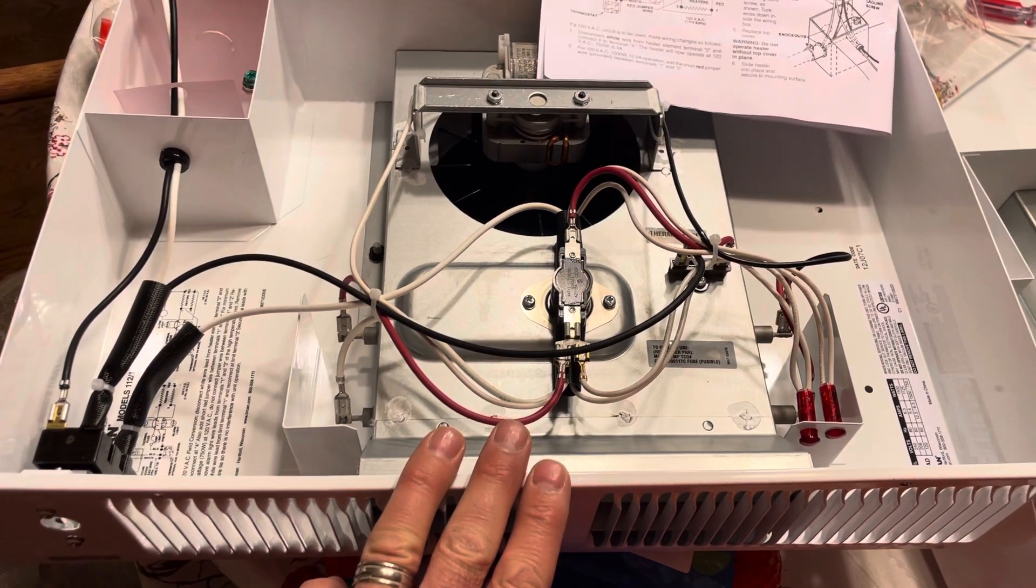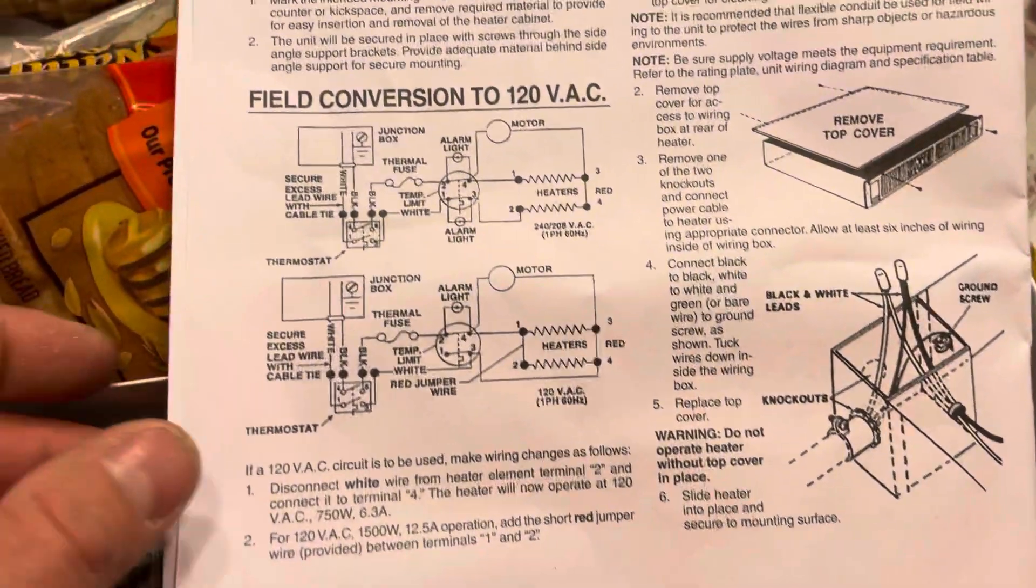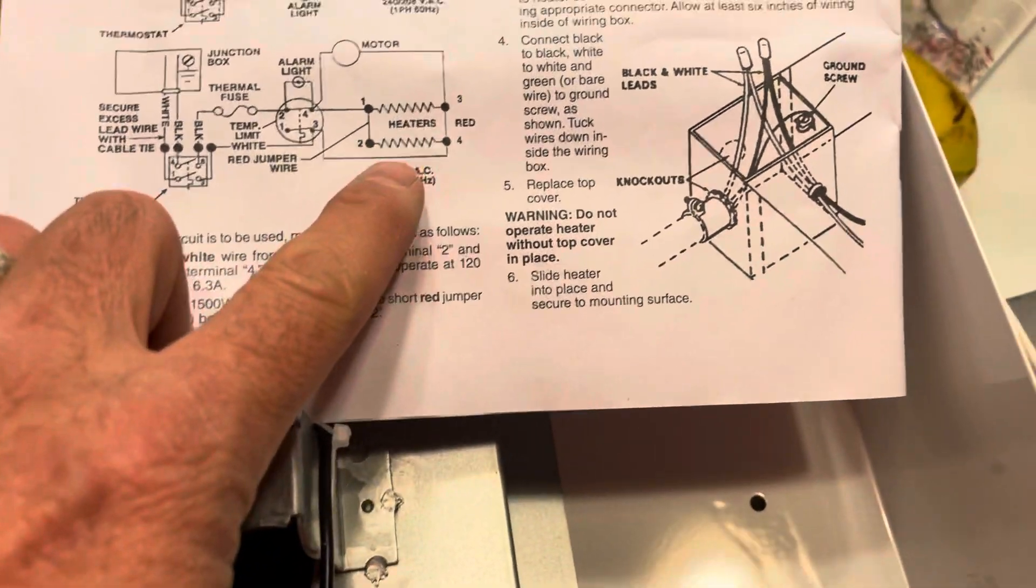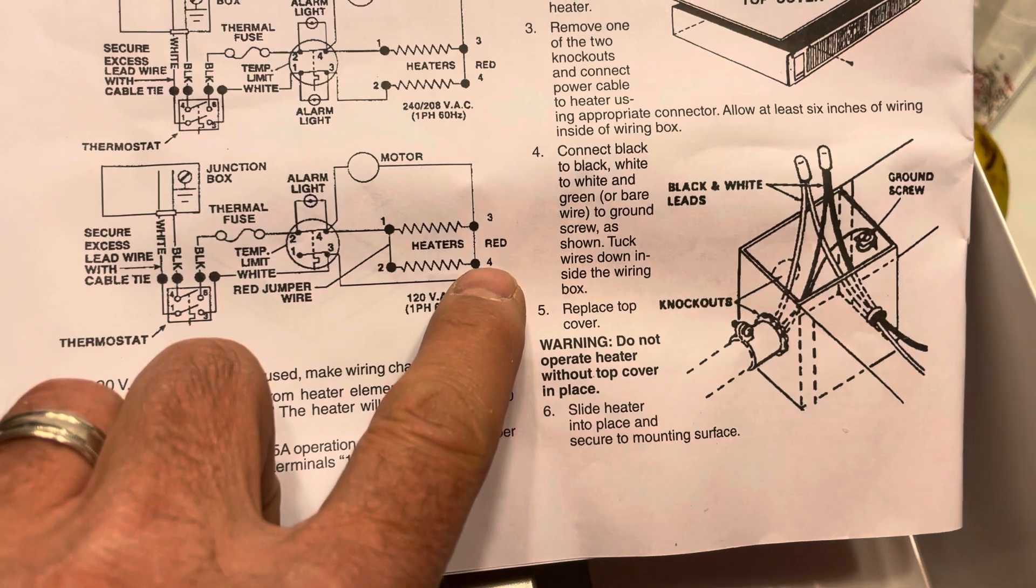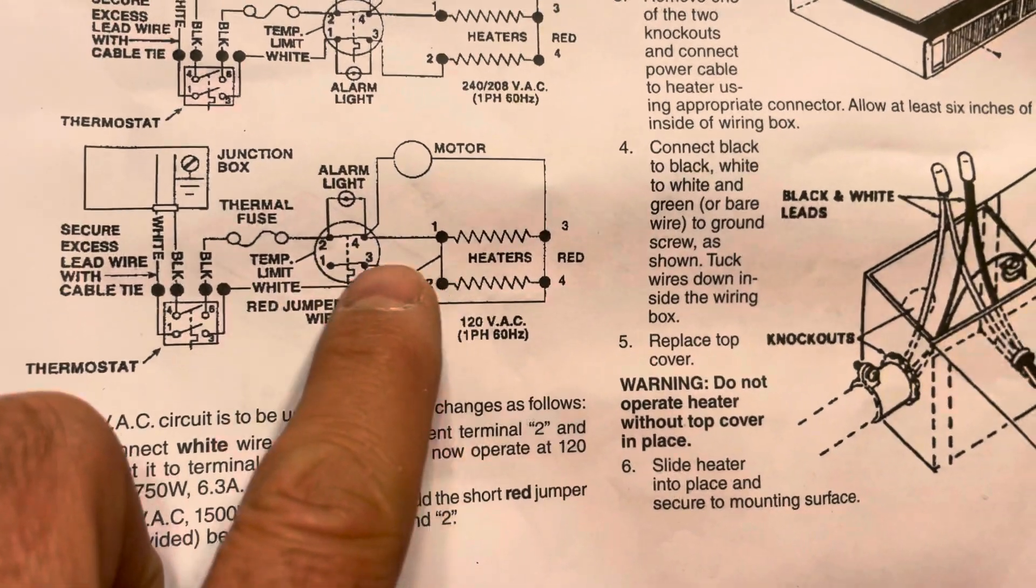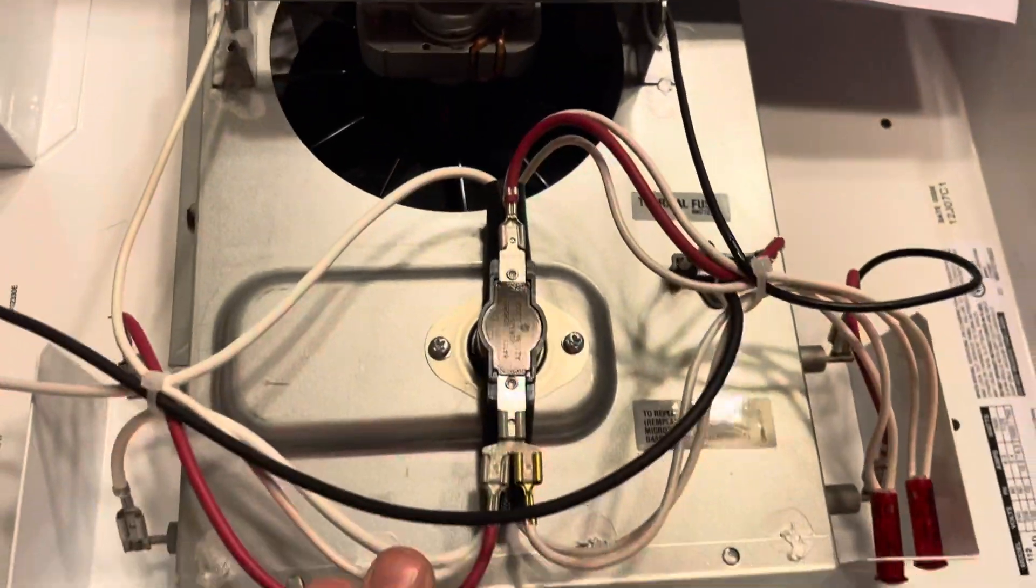So this is the way it comes in its OEM condition out of the box, and this is wired for 220. When we read the instruction manual it's a little confusing because it's showing the box here with the correct terminals three and four on this side, but it's showing the alarm lights on the other side on the left side.